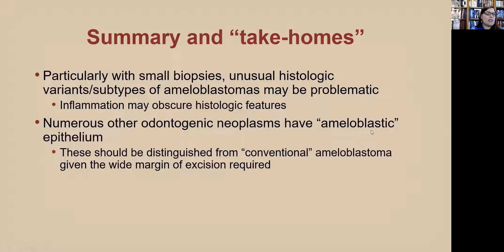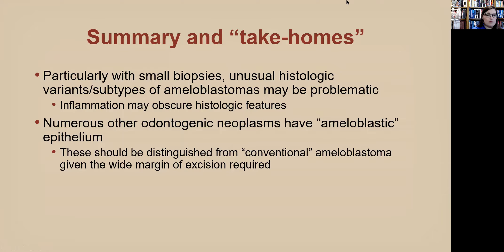Summary and take-homes: With small biopsies, unusual histologic variants or subtypes of ameloblastoma can be problematic. Inflammation can obscure histologic features, particularly in our KCOT. Unicystic ameloblastoma can be a difficult diagnosis. And it's worth being aware that many odontogenic neoplasms contain ameloblastic epithelium — it's important to distinguish these from conventional ameloblastoma, given how aggressively conventional ameloblastoma is treated with one to one-and-a-half centimeter margins.